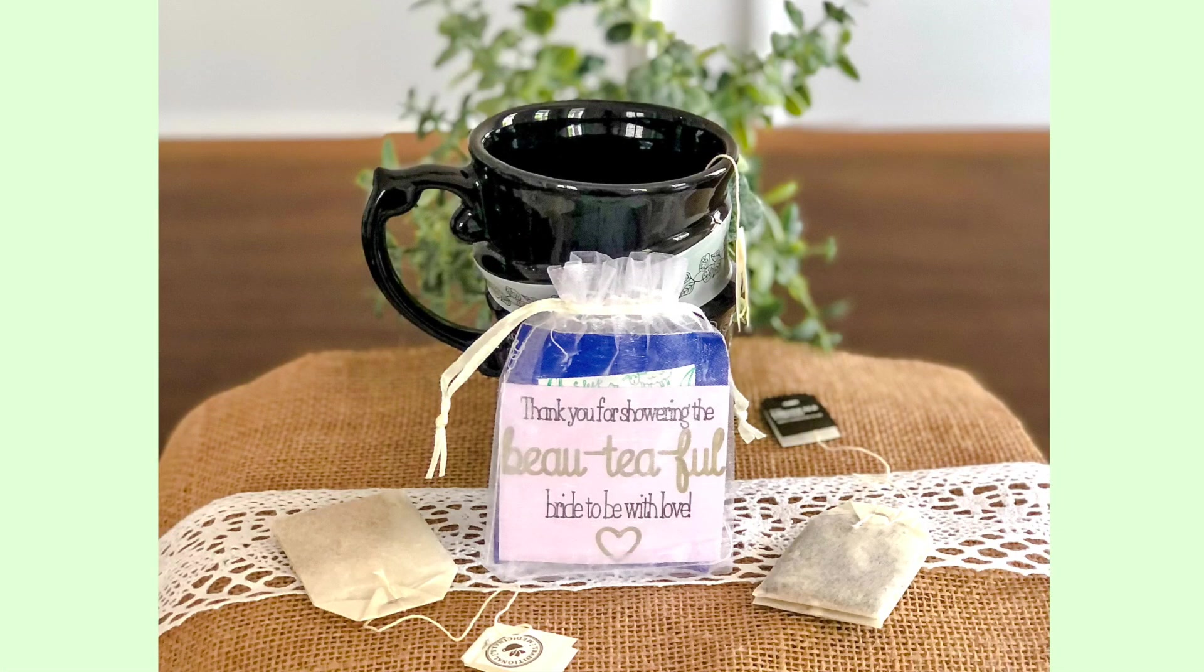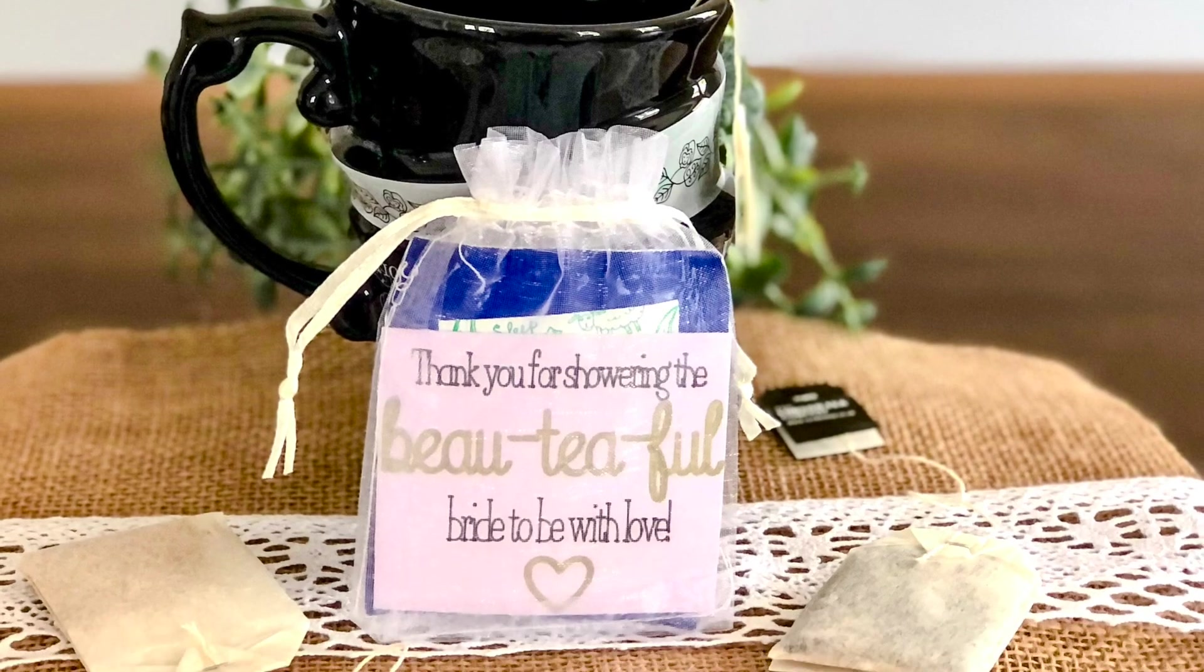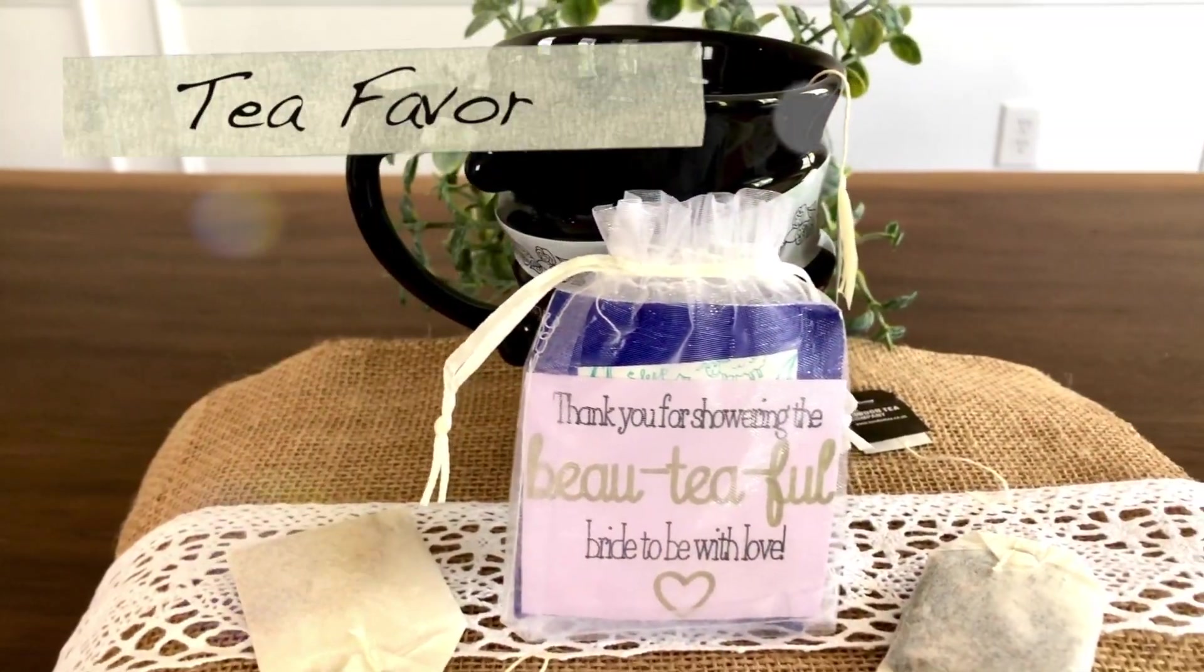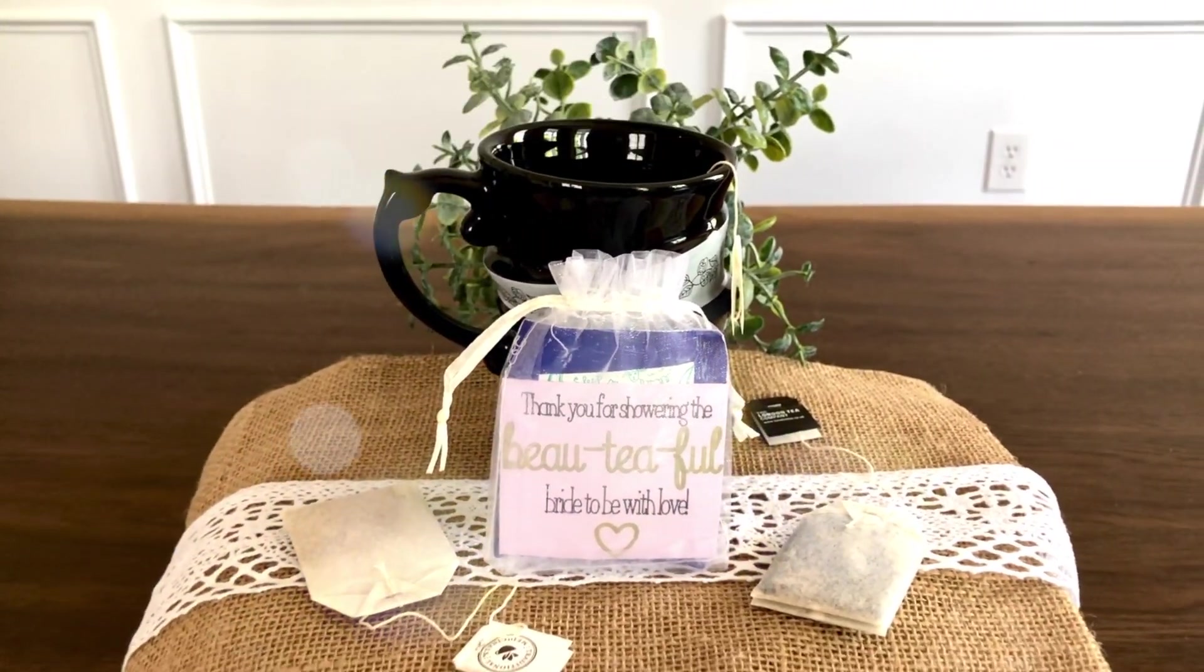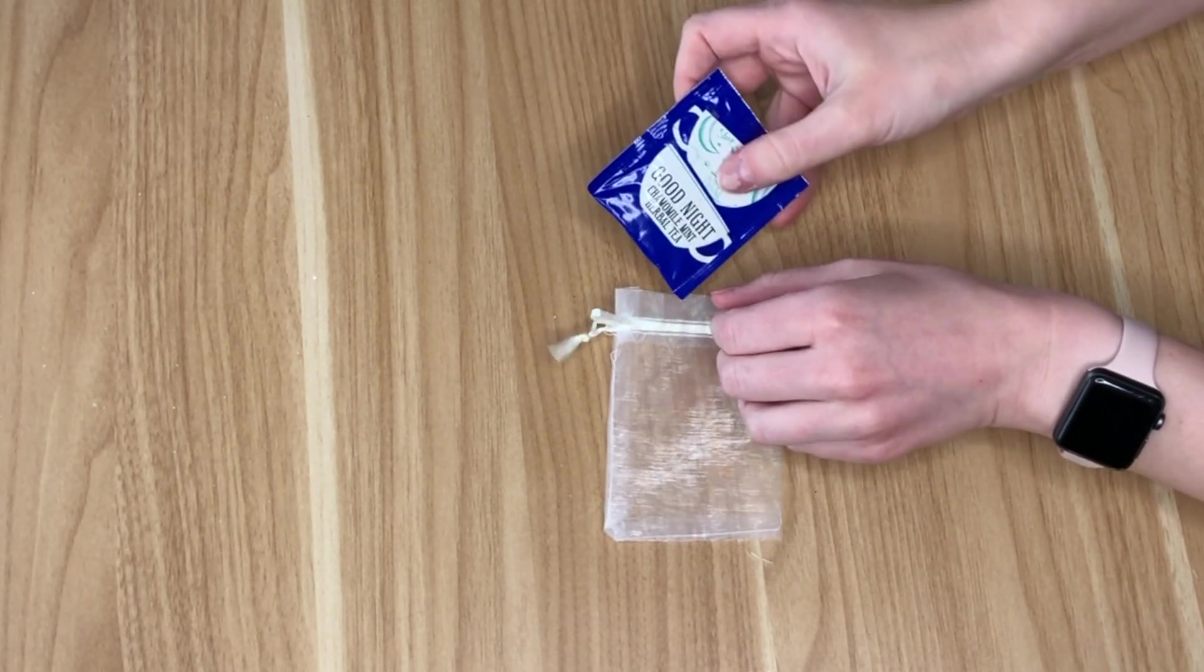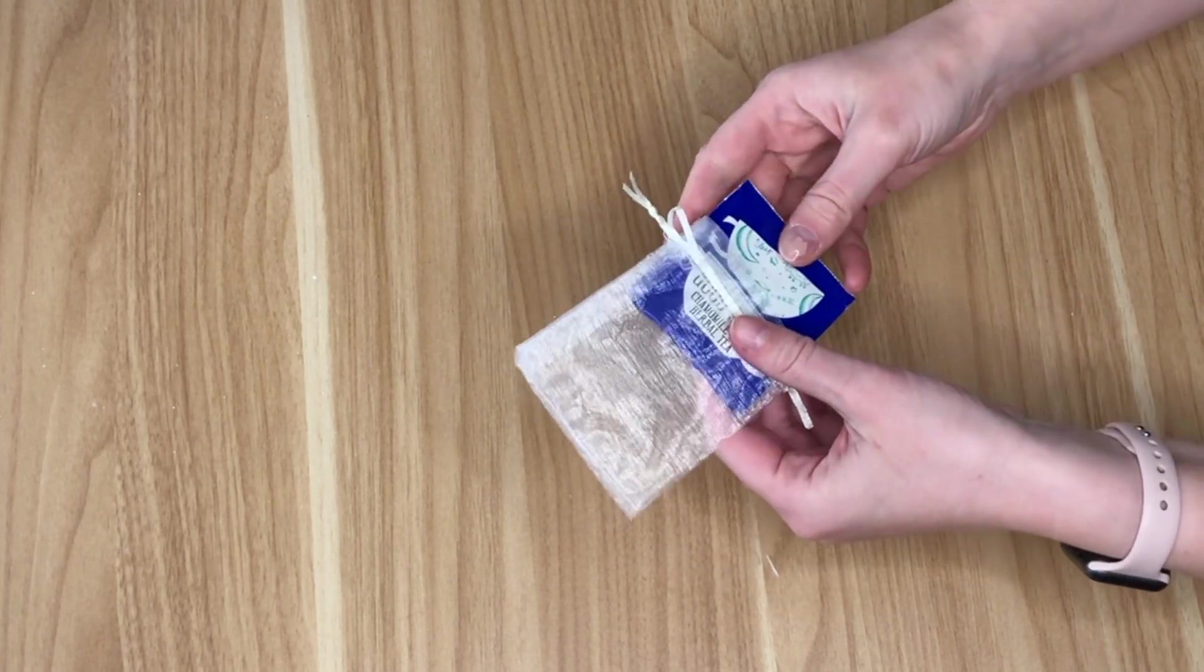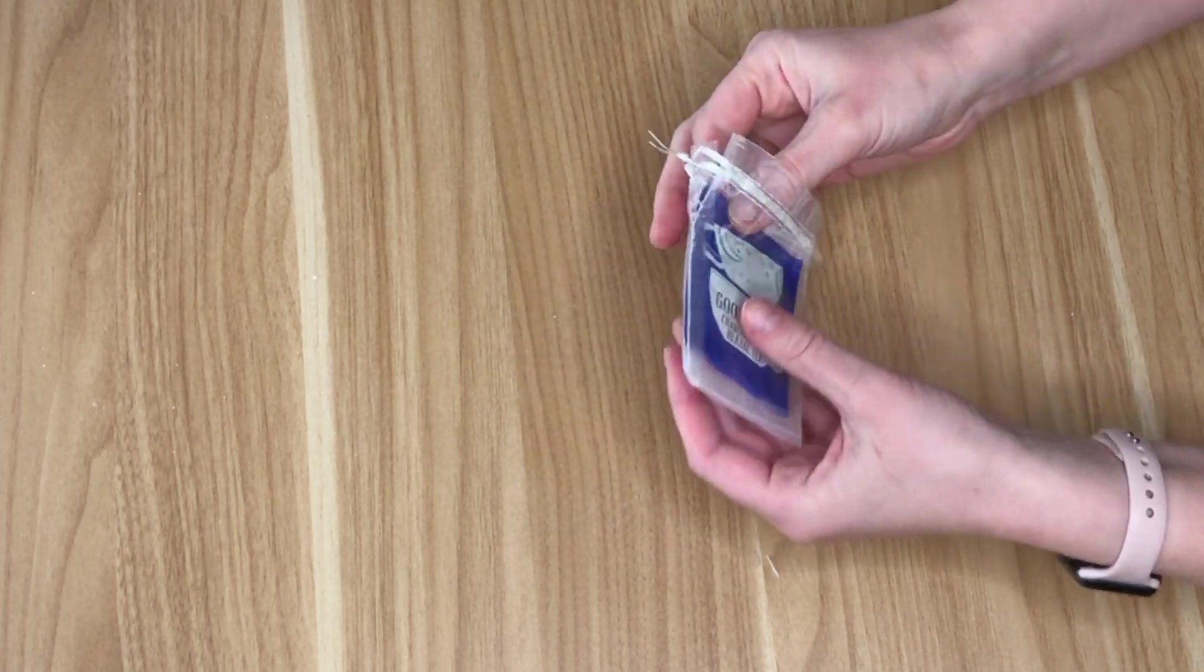The next DIY, we're going back to the tea party theme. And this is a super quick and easy one to leave your guests with a sweet tea favor at your bridal shower. This one, like I said, very easy. I just took one of these small sachets from the Dollar Tree. They come in a pack. Then I tucked in this tea. I liked it because it had the cute little tea cups on it.